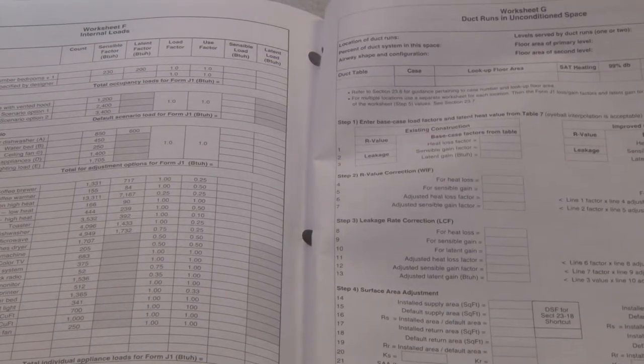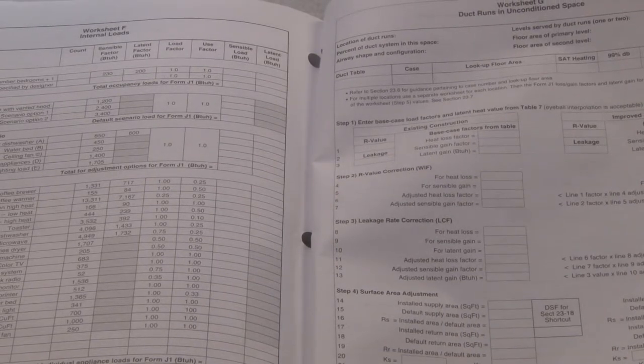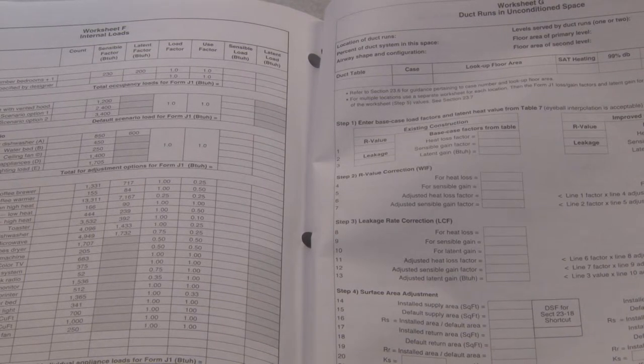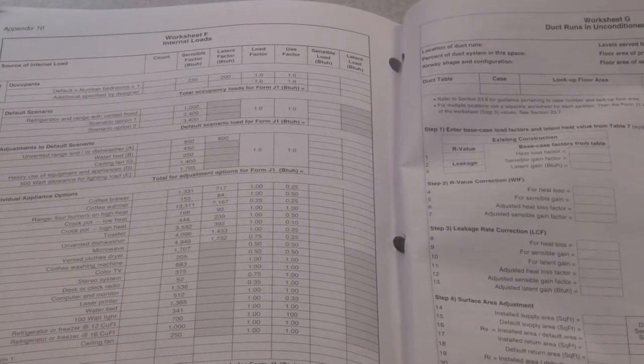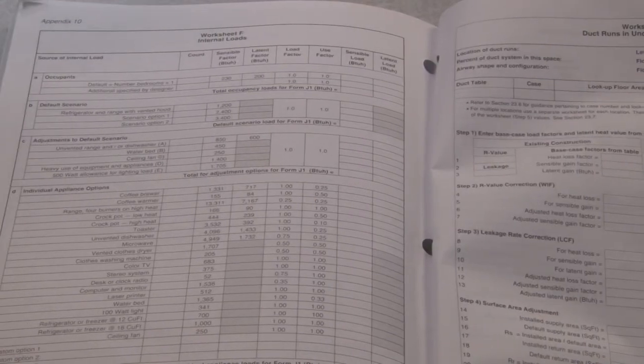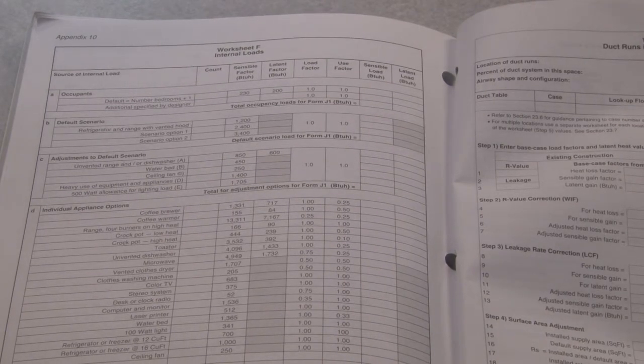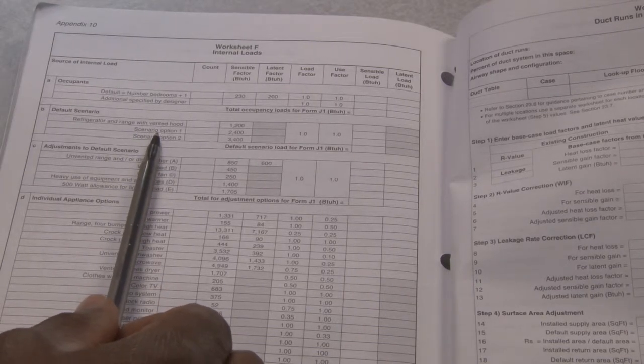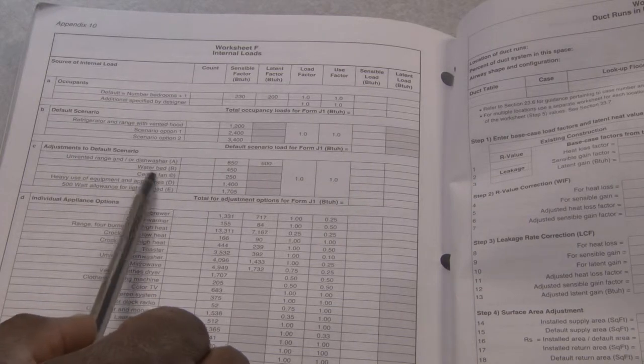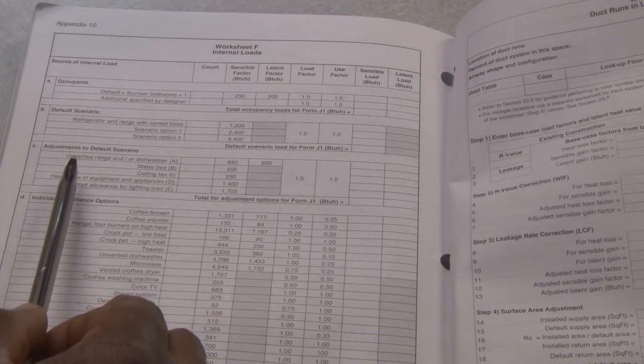Now we go into worksheet F. Internal loads. What do you have in the house? Do you have a lot of pets? How many people are living in a house? Do you have a large aquarium that can add heat load to a house? Do you have other things that can cause issues with determining the load of a house? So as we go through worksheet F, we'll look at the occupants. What is the size of the refrigerators? Things that you can add heat to the house. Looking at other things like water heaters or we're looking at even a water bed that has a heater in it, add a great deal of heat energy into a room.